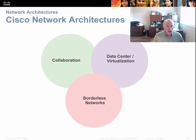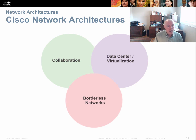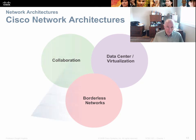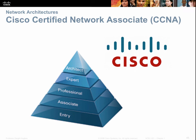Cisco has several network product architectures. Borderless networks are basically VPNs allowing you to access your network from outside the company walls. Data center virtualization technologies are what we call cloud computing. Collaboration includes things like video conferencing. Cisco also offers a range of certifications — you're probably in this class going for either the entry-level CCENT, Cisco Certified Entry Level Network Technician, or working toward a CCNA associate-level certification, with the option to progress to professional, expert, or architect level.